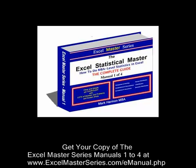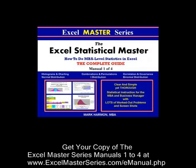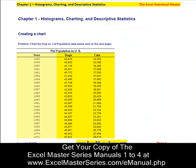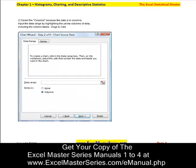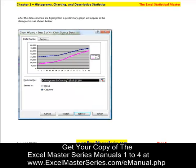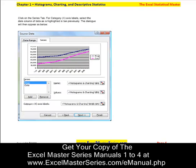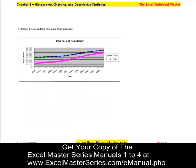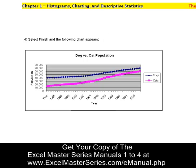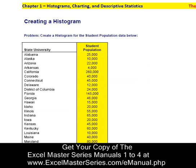Here's the first manual. It covers histograms, combinations, permutations, correlations, covariance, the normal distribution, t-distribution, and the binomial distribution. Here we're going to make a chart out of that data — I walk you through step by step with lots of screenshots. There's the chart that we will make from that data.